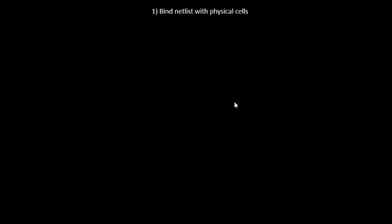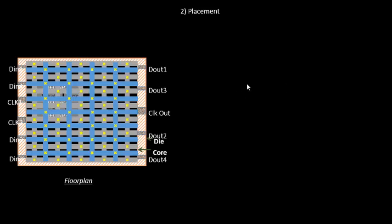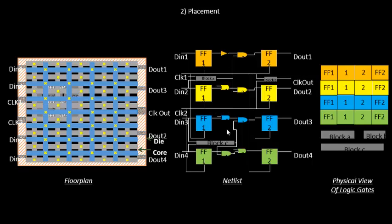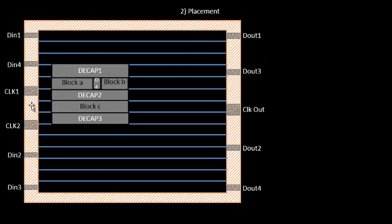In a broader sense, the library consists of cells, shapes and sizes, various flavors of the same cells, and timing and delay information. Once we've given proper shapes and sizes to each gate, the next step is to place those shapes onto the floor plan. We have a well-defined floor plan with input and output ports properly defined, a netlist with physical views of the logic gates, and now we need to place this netlist onto the floor plan.